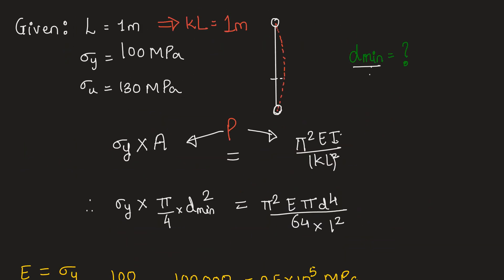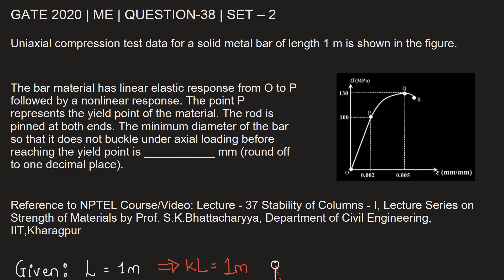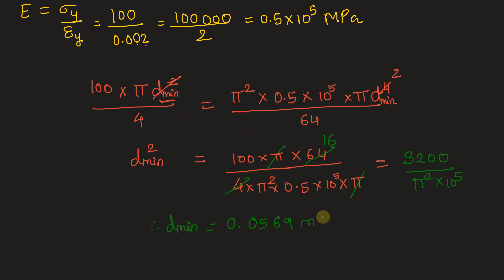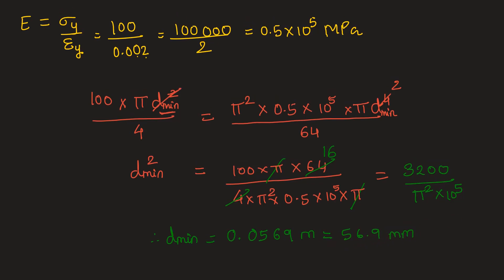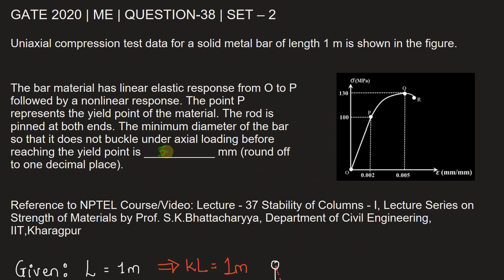Now let us see in which unit we need the answer. We need the answer in mm. So let us just multiply this with 1000 and we get it to be 56.9 mm. We are being asked to round it off to one decimal place. So we have the answer in one decimal place, 56.9. Let us write it here, 56.9 mm.